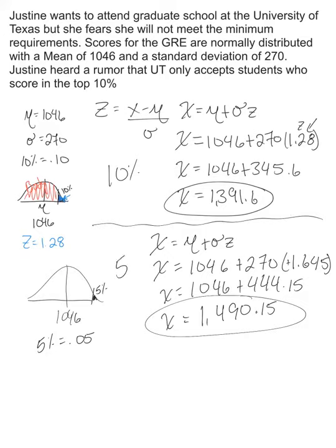The top one was the top 10% cutoff, and this one is the top 5%. If you're looking for the bottom, you would just make that Z score negative, essentially subtracting from the mean. But for this example, we're finding the top 10% or top 5% cutoff score.